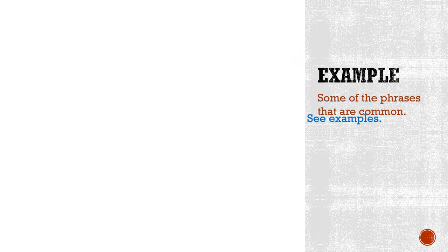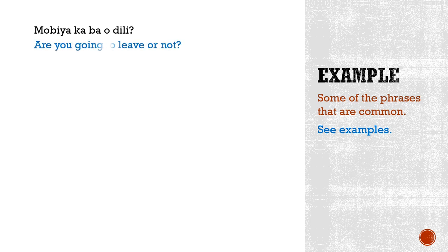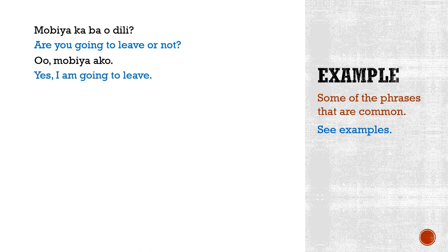Let's continue with examples. We have the question: Mobiya ka ba o dili? Biya is to leave, so mobiya means going to leave. The question translates to: Are you going to leave or not? And then you answer: Oo, mobiya ako — Yes, I am going to leave. Or you can also express it as: Yes, I am leaving.